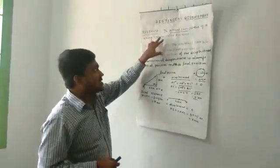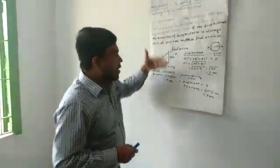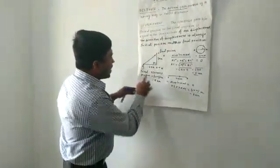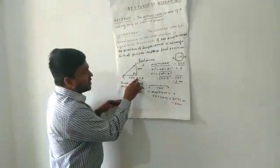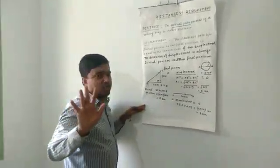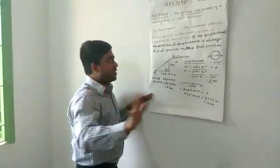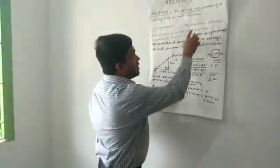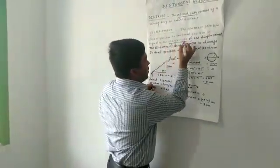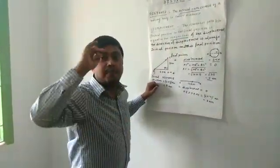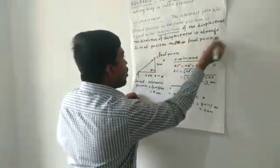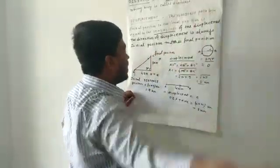Regarding distance: distance only has magnitude — that is the actual path. Suppose the particle starts from point A to point B and then reaches point C; the actual path equals 7 kilometers. So this distance quantity only has magnitude, and that is why distance is called a scalar quantity. Regarding displacement, the shortest path between initial and final position equals the magnitude of displacement, but how can you find the direction? The direction of displacement is always from initial position towards the final position.